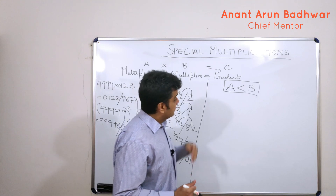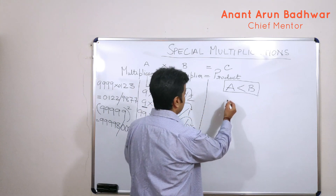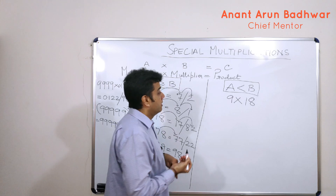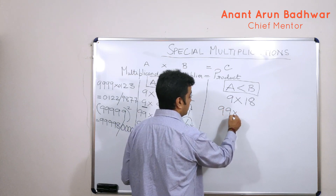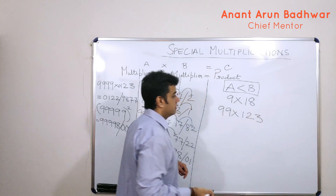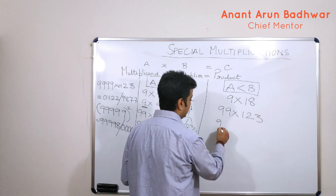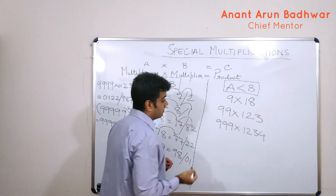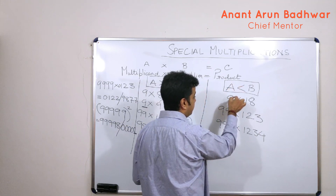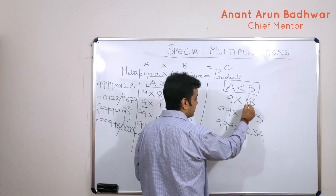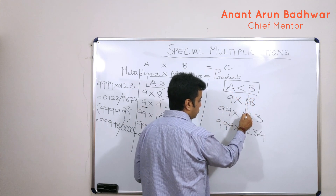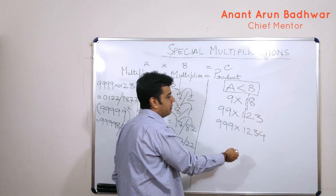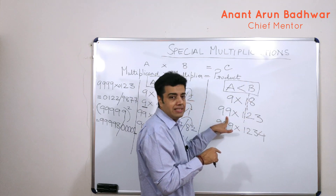This is the case when the number which has all 9's is equal to or greater than the multiplier. The second case is when the 9's are fewer than the multiplier's digits. For example: 9 into 18, or 99 into 123, or 999 into 1234. I draw a line of separation based on the number of 9's the multiplicand has — so for one 9, separate 1 digit from the right of the multiplier.